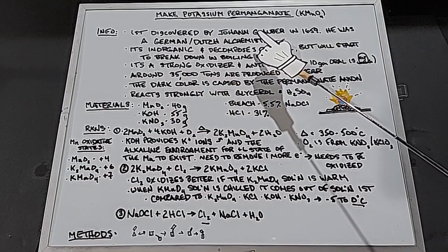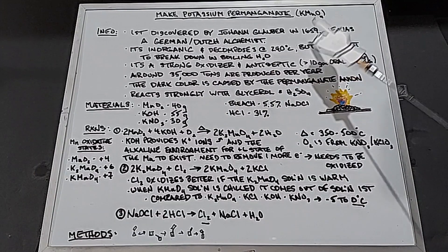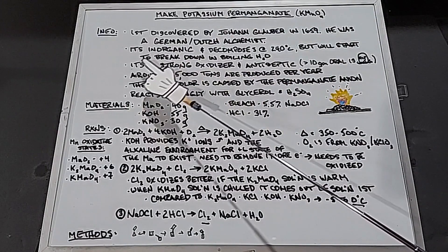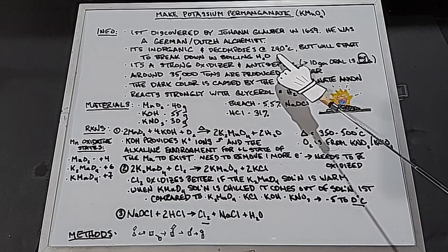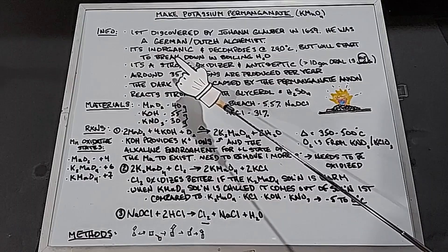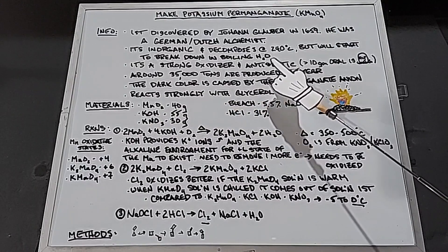It was first discovered by Johan Glauber in 1659, quite a while ago. He was a German-Dutch alchemist, and he found it by accident. It's inorganic and decomposes at 240 degrees Celsius, but it'll start to break down in boiling water. Most people know it because it's a strong oxidizer, but it's also an antiseptic.